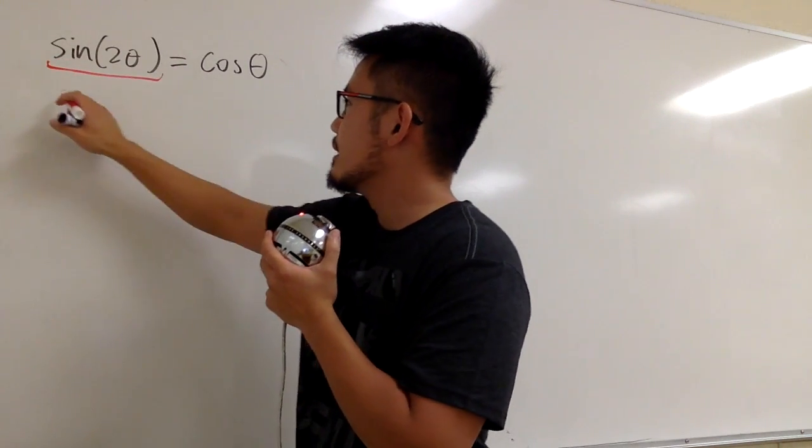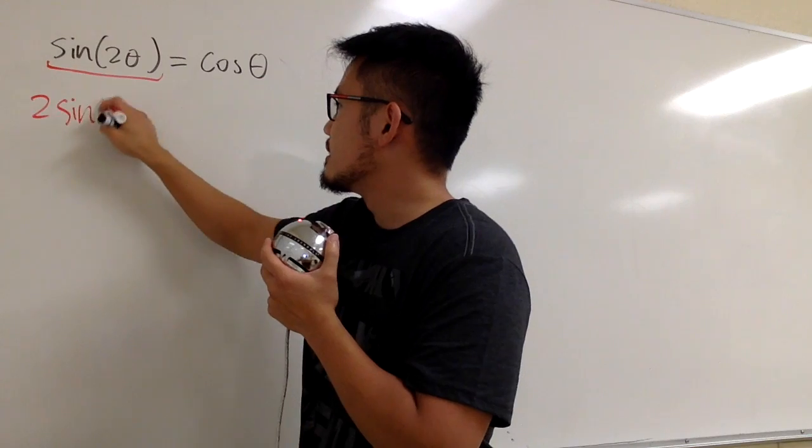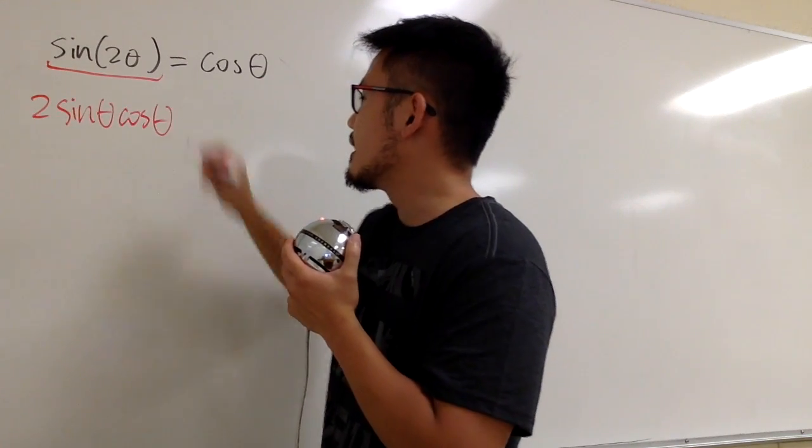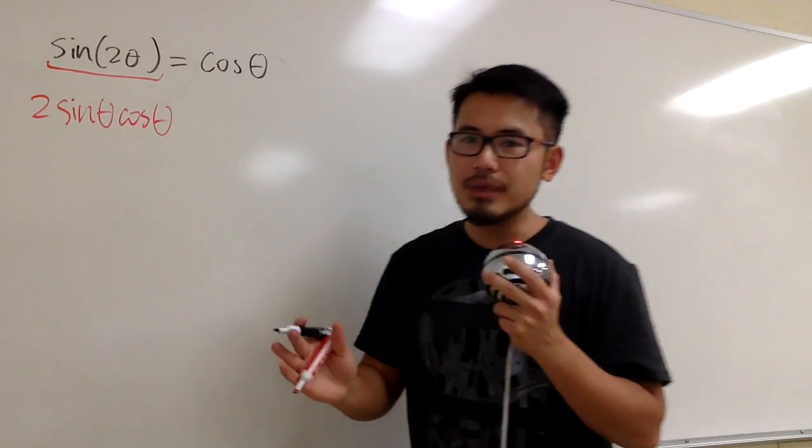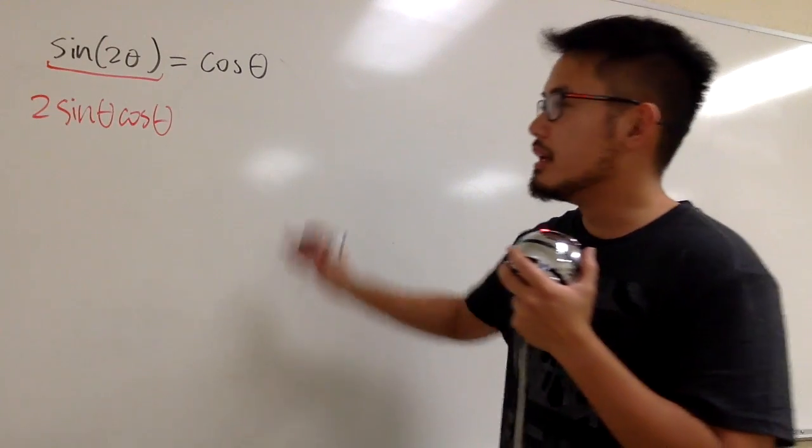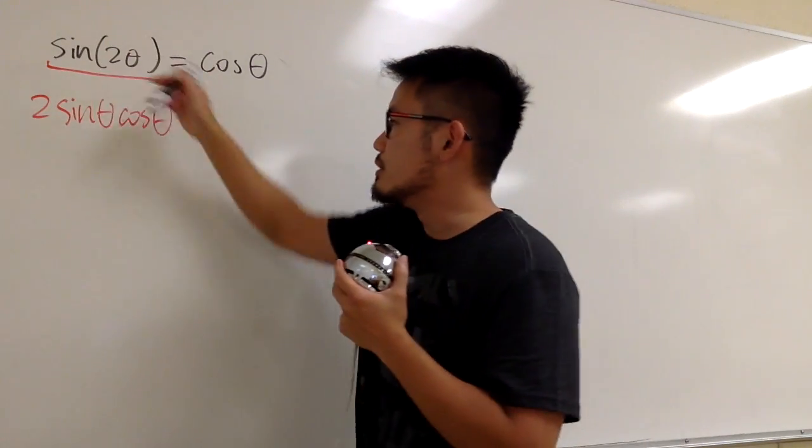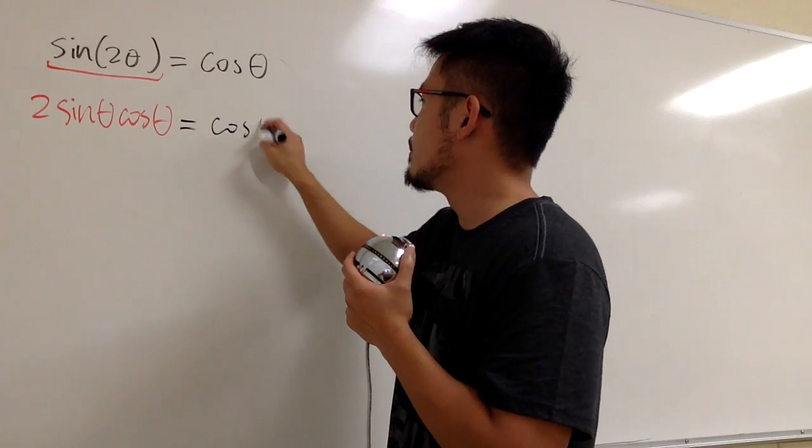This is the same as what? 2 sine θ times cosine θ, right? We have to make sure all the angles are the same in a tricky equation in order to proceed. So this is what we can do at the moment.